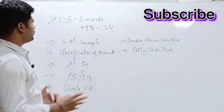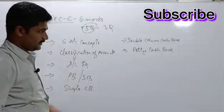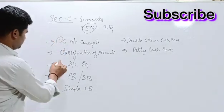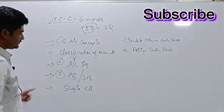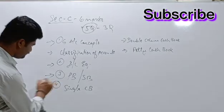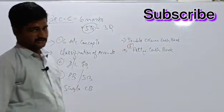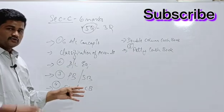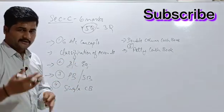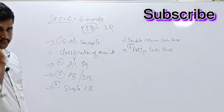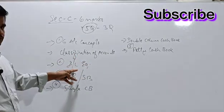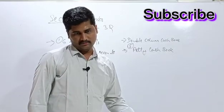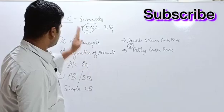Out of these seven categories, only five will appear on the exam. The five to focus on are: Number one — six accounting concepts. Number two — accounting equation. Number three — purchase book or sales book. Number four — single column cash book. Number five — petty cash book. Accounting equation is more important than classification of accounts. Double column cash book appears in the 12-mark category, so skip it here.